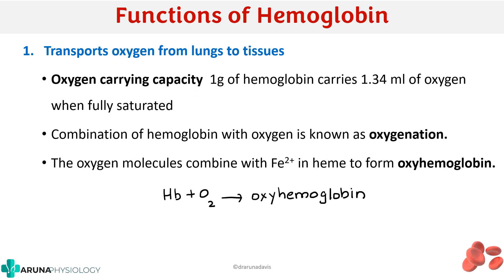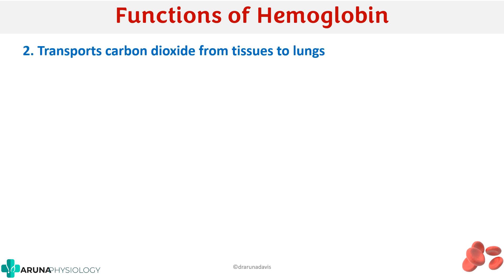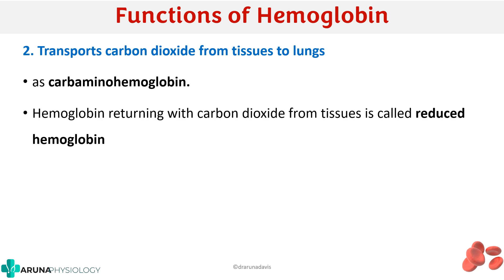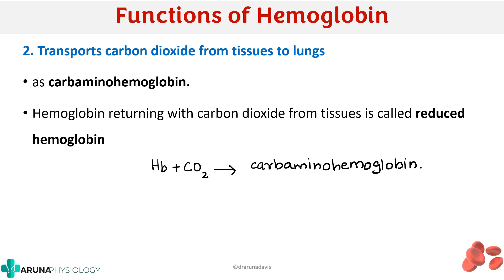The next important function is that hemoglobin transfers carbon dioxide from tissues to the lungs. When carbon dioxide combines with hemoglobin, the product formed is called carbaminohemoglobin — not carboxyhemoglobin. The hemoglobin returning with carbon dioxide from tissues is called reduced hemoglobin. So Hb plus CO2 gives you carbaminohemoglobin.